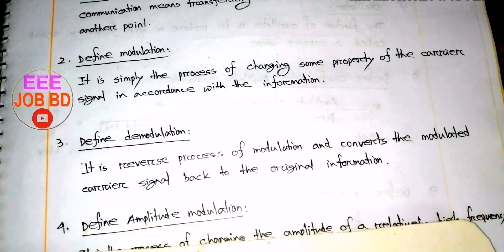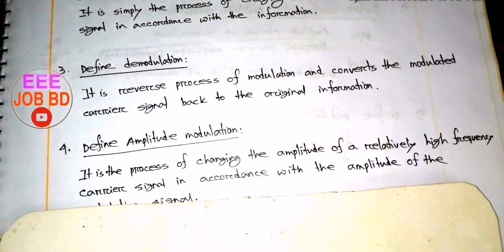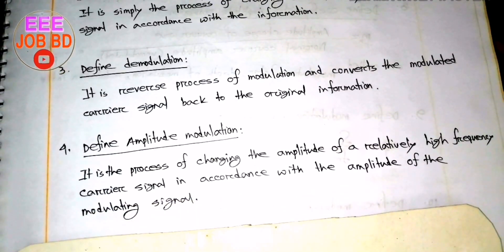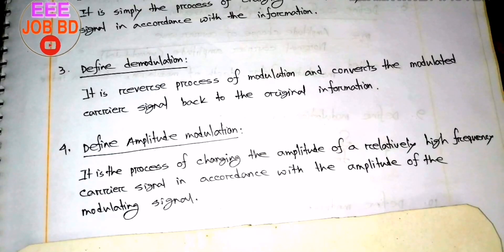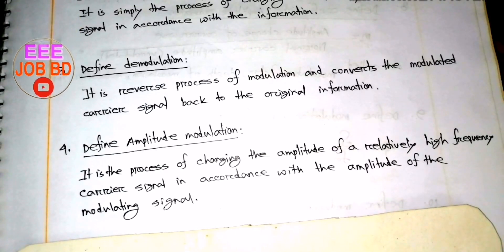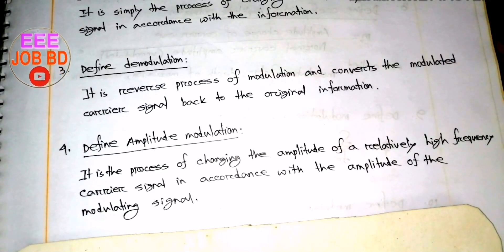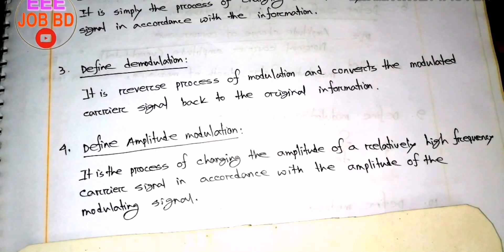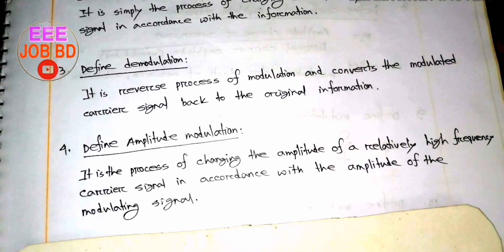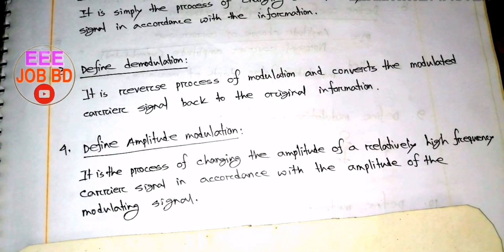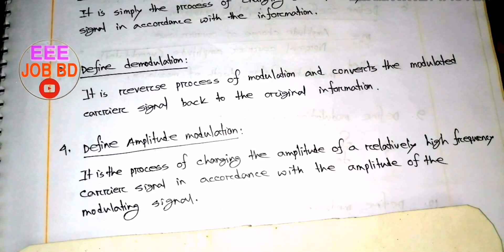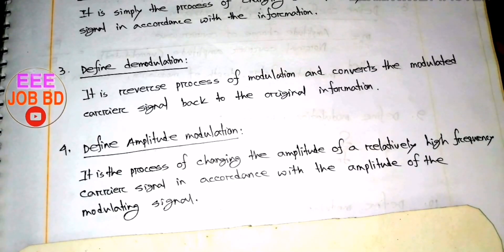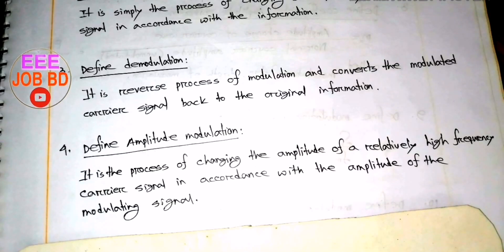Amplitude Modulation (AM) is the process of changing the amplitude of a relatively high-frequency carrier signal in accordance with the amplitude of the modulating signal. The modulating signal causes the amplitude change of the carrier signal. This is amplitude modulation.